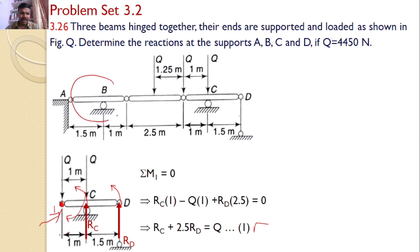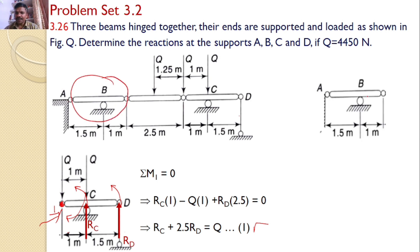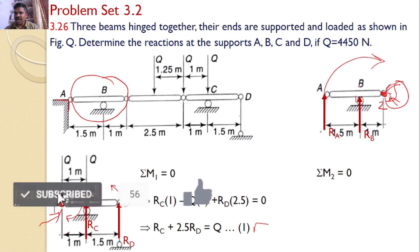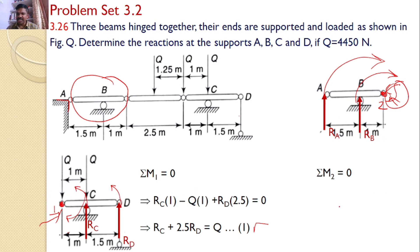Now I will take the beam A-B. At A there is a support which introduces a horizontal and a vertical reaction. Since there are no other horizontal forces, the horizontal component can be neglected. So the reactions are R_A at A and R_B at B. Taking moments about the hinge point 0.2: R_A will introduce a clockwise moment and R_B will also introduce a clockwise moment. So R_A into 2.5 plus R_B into 1 equals zero, giving Equation 2: R_B equals minus 2.5·R_A.